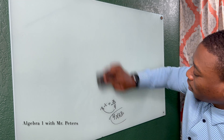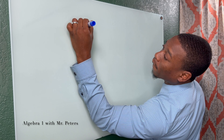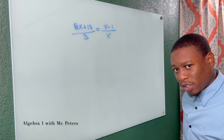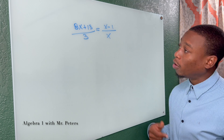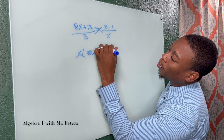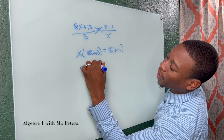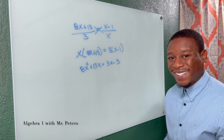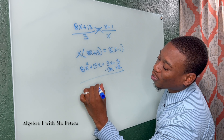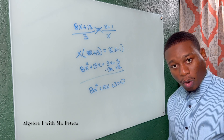But is there another way to solve this? This method is so key. We can use the properties of proportions — cross multiply — to solve this. So now we have x times 8x plus 13 is equal to 3 times x minus 1. Once we simplify, 8x squared plus 13x is equal to 3x minus 3. After subtracting 3x and adding 3, we get 8x squared plus 10x plus 3 is equal to 0 — the same quadratic equation.